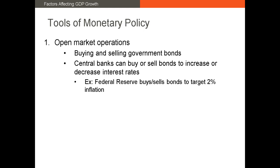Monetary policy will also affect macroeconomic conditions. Central banks, like the Federal Reserve, are often tasked with targeting an inflation rate or reducing unemployment. The Federal Reserve has a 2% inflation target. The Fed has three primary tools to adjust interest rates. First, it can buy and sell government bonds using open market operations, which is the most often used tool of the Fed.